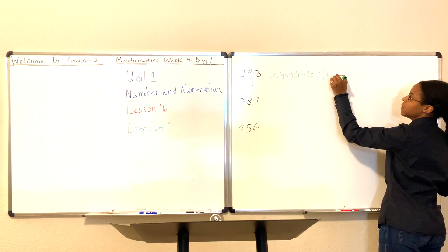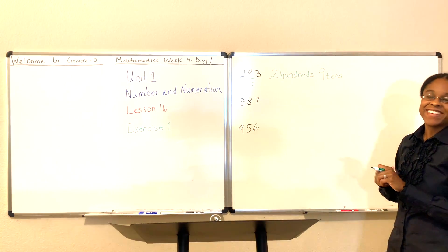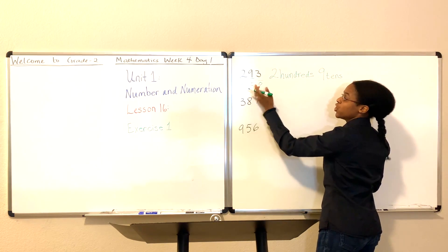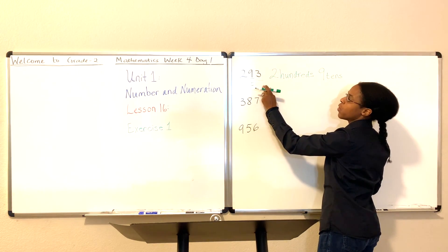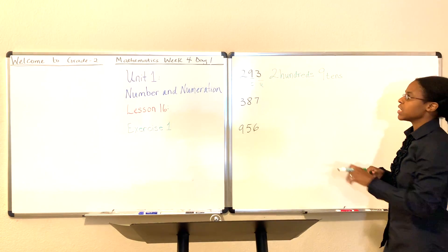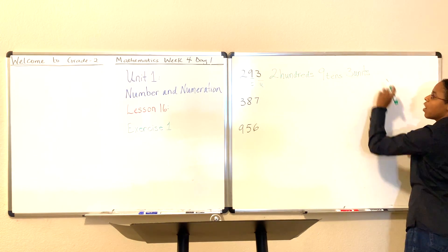And how many ones do we have? The ones follow the tens place. So this is the ones. Or you can say units. You can say O for ones or U for units. We usually use U for units. There are three units.